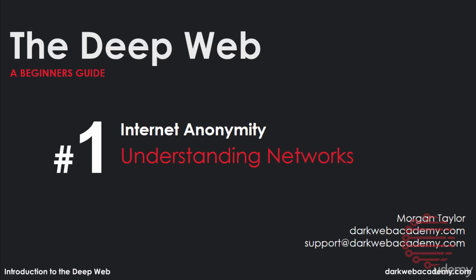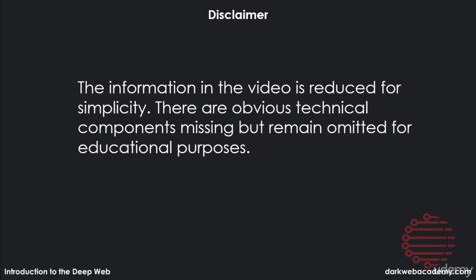Before you can learn how Tor makes your information and data secure and anonymous, it's important to learn how regular internet works. In this module, we'll discuss how regular internet networks connect you from your home to, say, Google or something like that. Obviously, some information is going to be missing — to give the best experience and fastest lesson, we have to reduce it as much as possible. This isn't a course on how the internet works; this is a course about the dark web. So we'll go through this quickly, but be sure to pay attention if you don't know how the regular internet works.